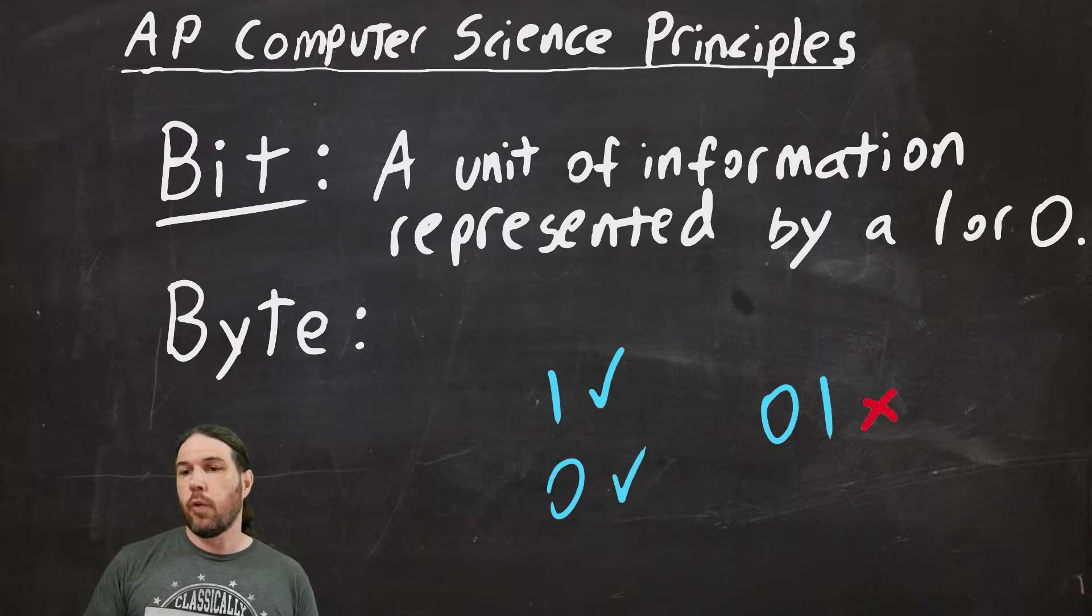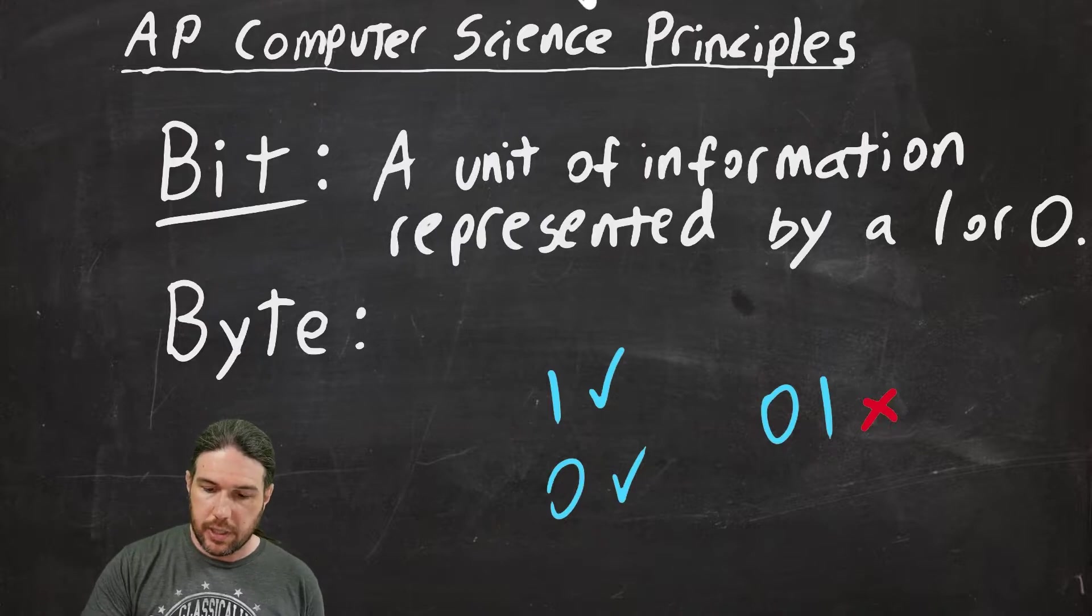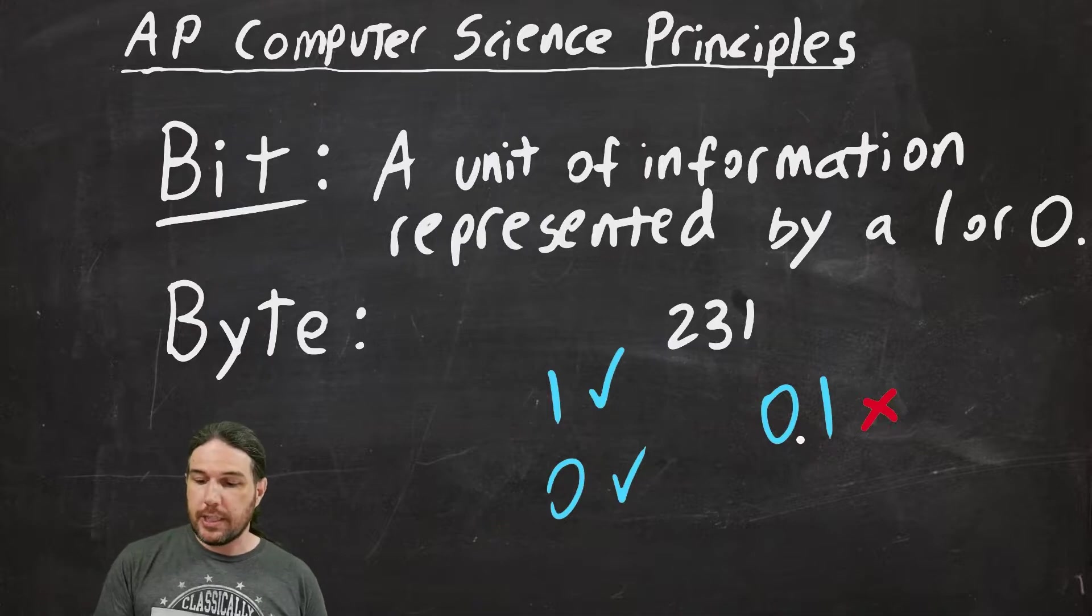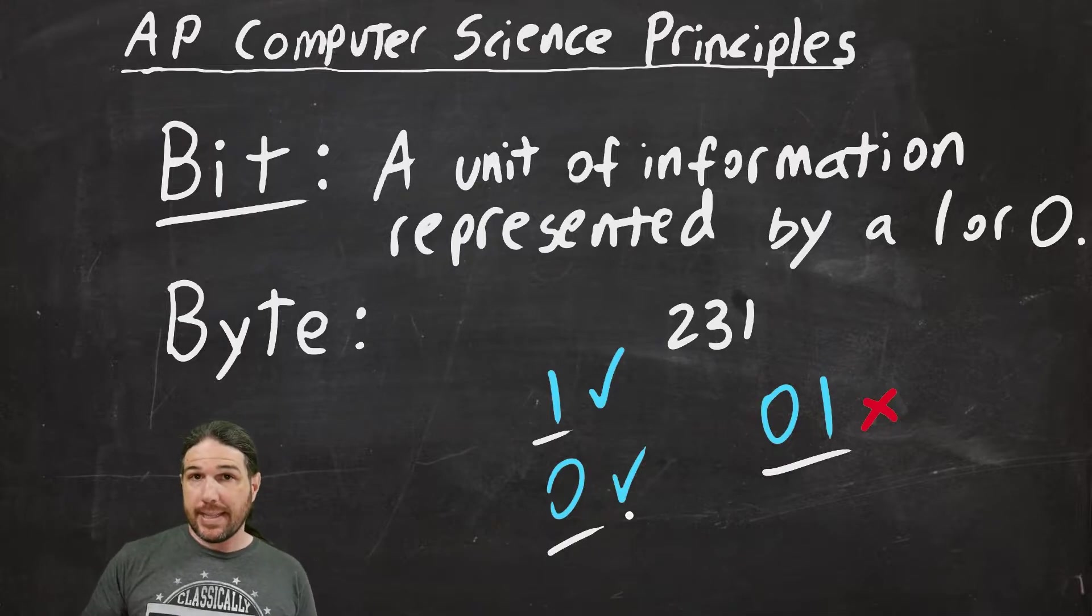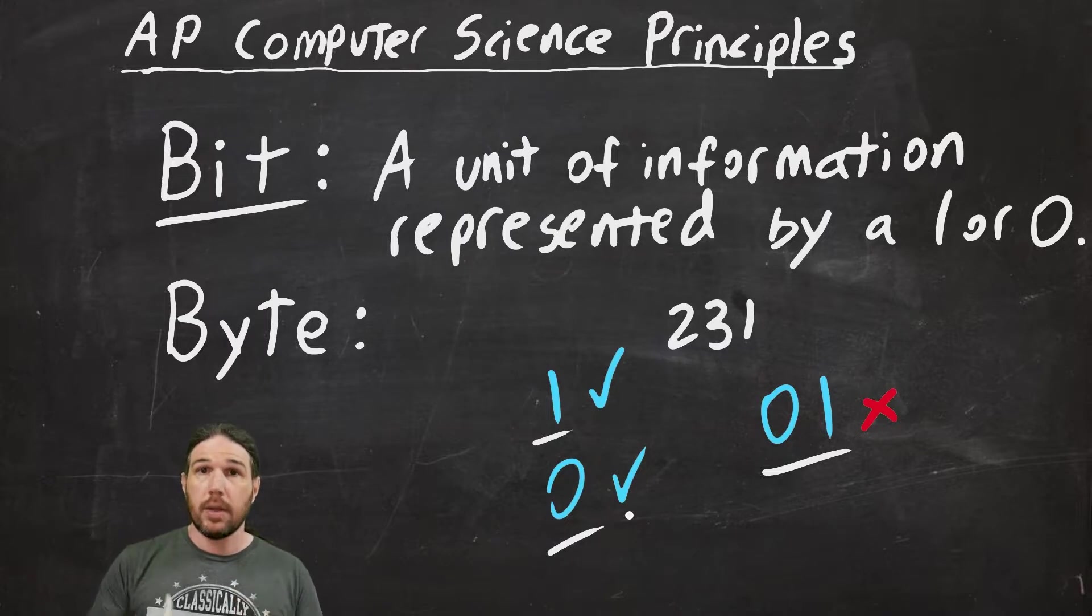In regular numbers, we have like digits. We have like the number 231 has three digits. This binary number has two bits, whereas these two each have one bit. I hope that makes sense. A bit is a 1 or a 0. You can't have both and you can't have neither.